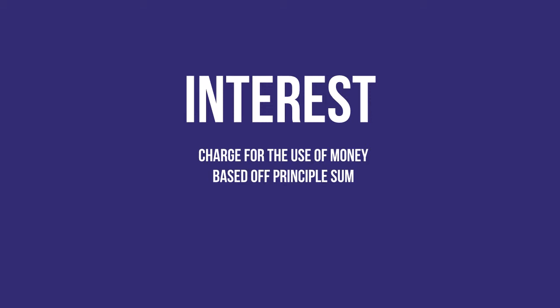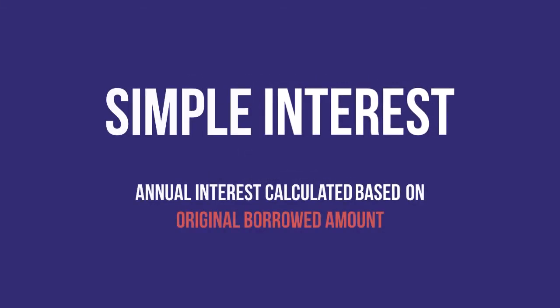Firstly, simple interest, which is basically the extra amount of money you have to return based on the principal amount alone. So no matter the period of the loan, you will simply add, for instance, 3% of the original amount to your debt every year.